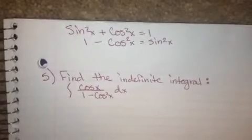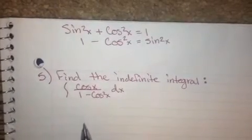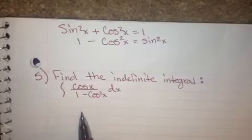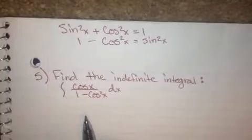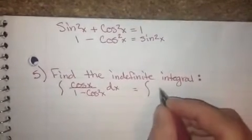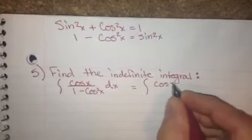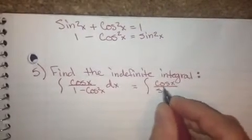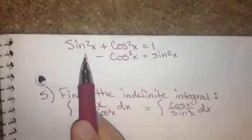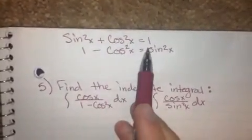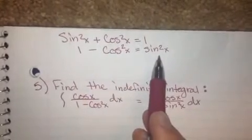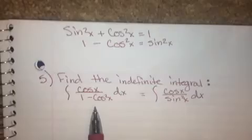The problem we have here is to find the indefinite integral of cosine x over 1 minus cosine squared x. We can rewrite this as cosine x over sine squared x, because sine squared x plus cosine squared x equals 1, so 1 minus cosine squared x equals sine squared x.